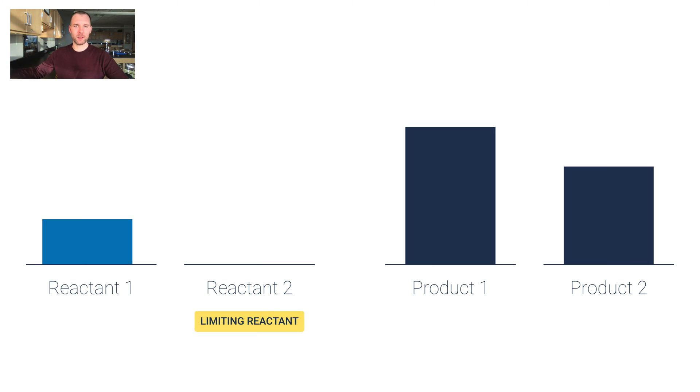We're done because reactant two is gone. It's turned into product one and two with some combination with reactant one. What's relevant is the fact that we don't have reactant two anymore, so therefore the reaction has stopped.